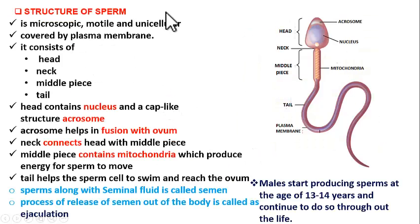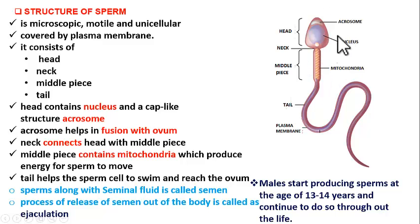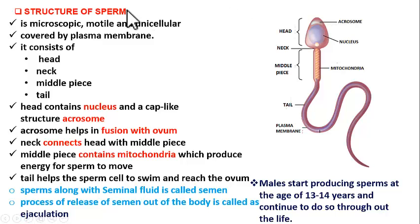How does a sperm look like? Sperm is microscopic, motile, and unicellular. Microscopic means it is very small — we cannot see it with our naked eye and we need a microscope with at least 400x magnification to observe it. In fact, this is the smallest cell in human beings. The smallest cell is sperm and the largest cell is ovum. It is also motile, meaning movable — it moves from the male parent to the female parent during the mating process.